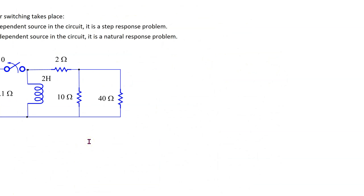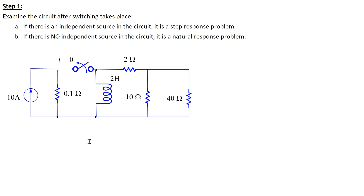The first step is to determine whether we are solving for the natural or the step response of an RL circuit. In order to do this, we examine the circuit after switching takes place. If there is an independent source in the circuit, then it is a step response problem. If there is no independent source in the circuit, then it is a natural response problem.